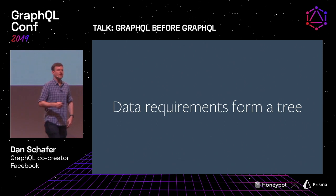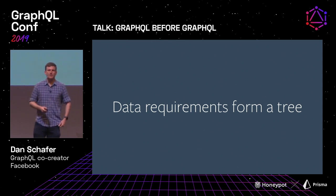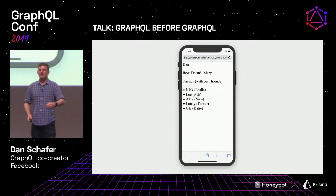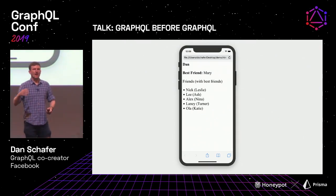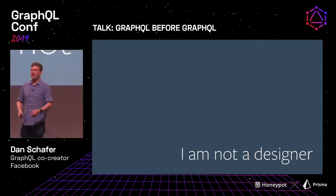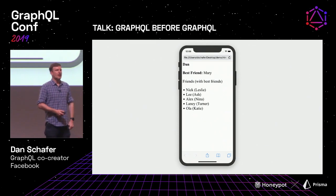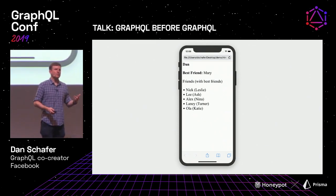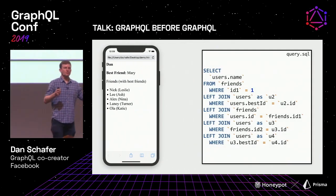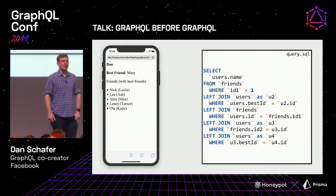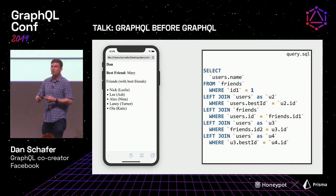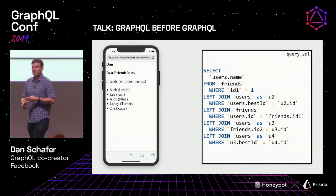Let's start with the first one: the idea that data requirements form a tree. I want to have a concrete example throughout — a very basic sample app that has a user, a best friend, a list of friends and their best friends. If we were going to build this, we might throw it all into a SQL table and query the data. We'd fetch the user's name, their friends, their best friend, join the friends, and fetch their names and their best friends' names.